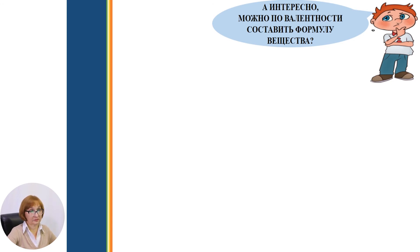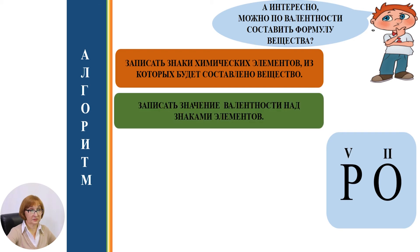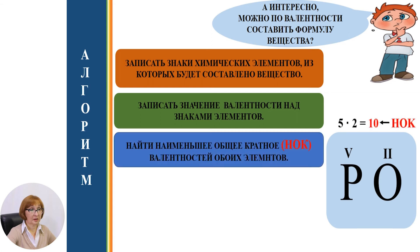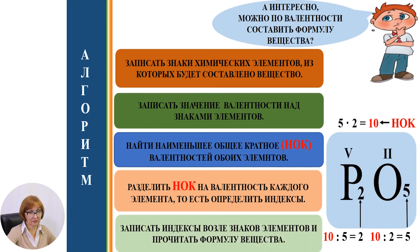Можно также по валентности составлять формулу вещества. Составим алгоритм. Необходимо записать знаки химических элементов, из которых будет составлено вещество. Выбираем два элемента: фосфор и кислород. Записываем валентности: над фосфором 5, над кислородом 2. Находим наименьшее общее кратное: 5 умножить на 2, получаем 10. Затем делим НОК на валентность каждого элемента: 10 делим на 5 — получаем 2; 10 делим на 2 — получаем 5. Это индексы. Записываем формулу P2O5.